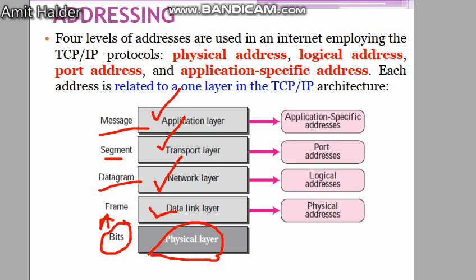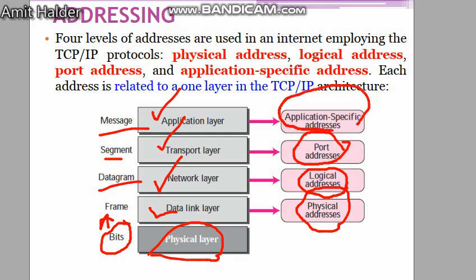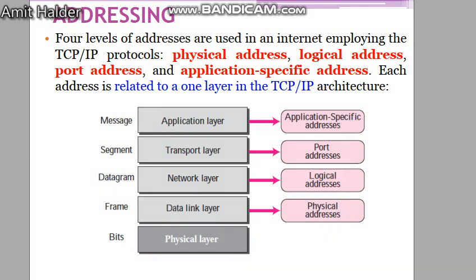At the data link layer, addresses are known as physical addresses, such as MAC addresses. Logical addresses are employed at the network layer. Port addresses are employed at the transport layer, and application-specific addresses are employed at the application layer. We need to know the characteristics of each address type, where it should be used, and how it is configured.